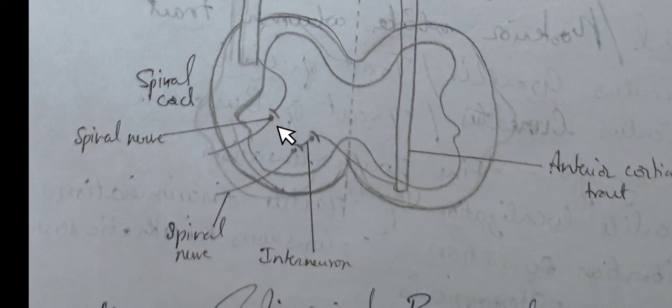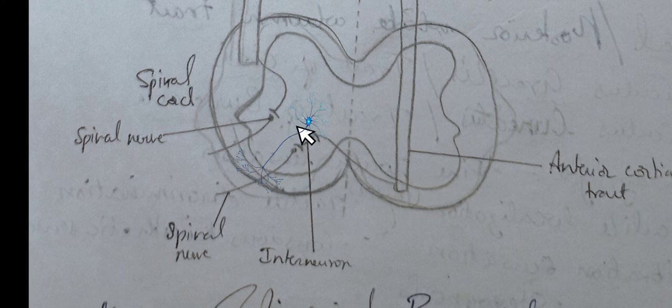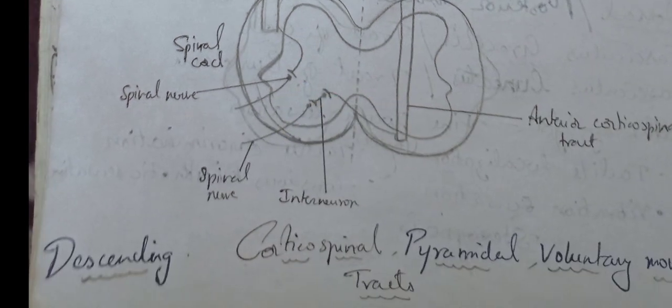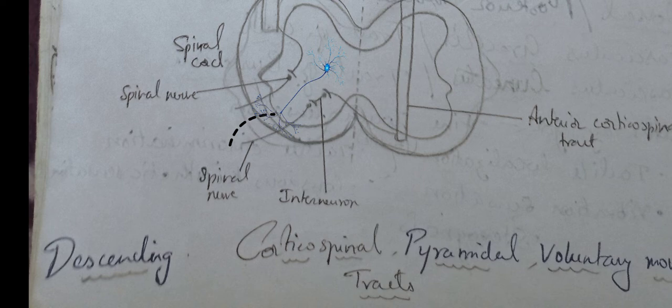All the fibers reach the anterior gray horn of the spinal cord. From here, directly or through interneurons, they synapse with alpha motor neurons, and their axons leave the spinal cord as spinal nerves.